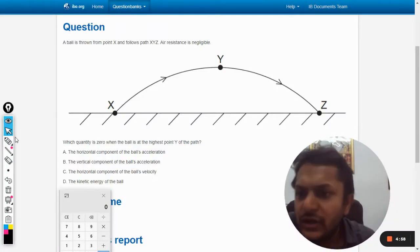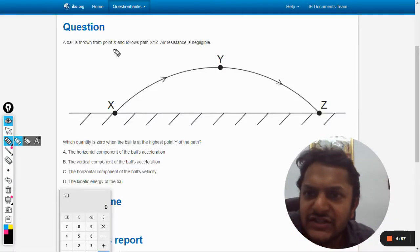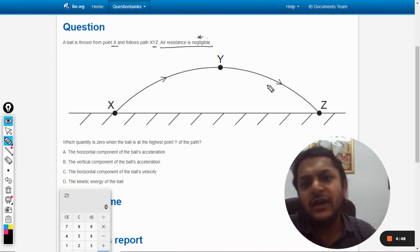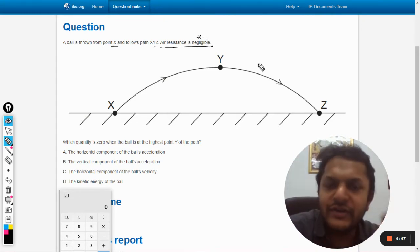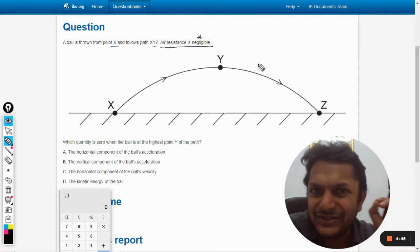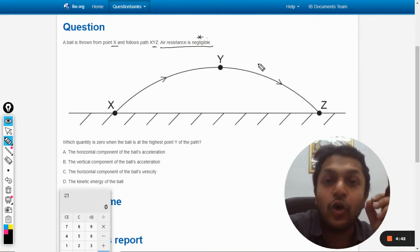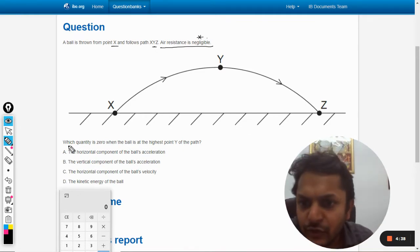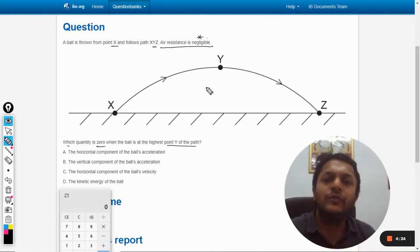In this question, a ball is thrown from point X and follows the path XYZ. Air resistance is negligible - as I've told you again and again, in these kinds of questions, always be very particular about air resistances. Generally they are always negligible, but many times it is given that they are not negligible. So which quantity is zero when the ball reaches the highest point Y?